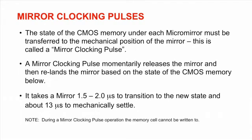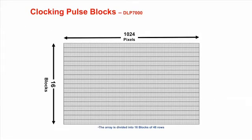This transfer is accomplished by sending a mirror clocking pulse to the DMD array. These pulses momentarily release the micromirrors and then relatch each micromirror in the state determined by the CMOS memory cell underneath each pixel. Unlike row data, these pulses are sent on a block-wise basis to the DMD.